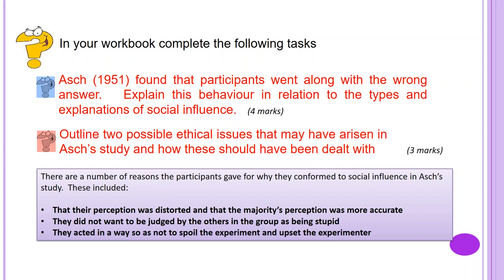The next question: outline two possible ethical issues that may have arisen in ASH's study and how these should have been dealt with, for 4 marks — two AO1 marks for description and two AO3 marks for evaluation or research methods.